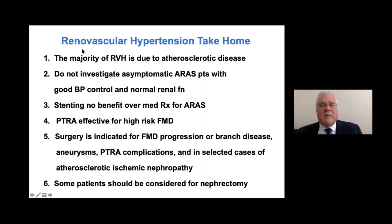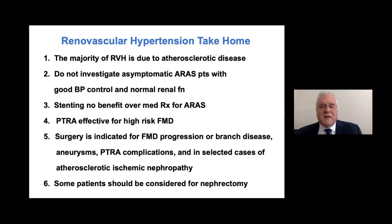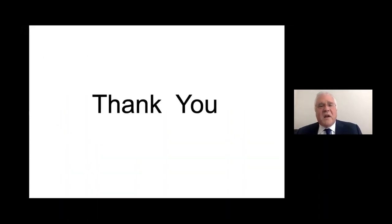Take-home messages for renal vascular hypertension: The majority is due to atherosclerotic disease. Don't investigate patients who are asymptomatic or have good blood pressure control with normal renal function. Stenting shows no benefit over medical therapy for atherosclerotic disease — shown by the CORAL study in 2014. These patients are best served by medical therapy unless they have complications. For fibromuscular disease, angioplasty alone is very effective and stenting is not necessary. However, in patients with fibromuscular disease who have progression, branch disease, aneurysms, angioplasty complications, or selected cases of ischemic nephropathy, surgery can be indicated. Don't forget nephrectomy, which is also an option in certain patients.